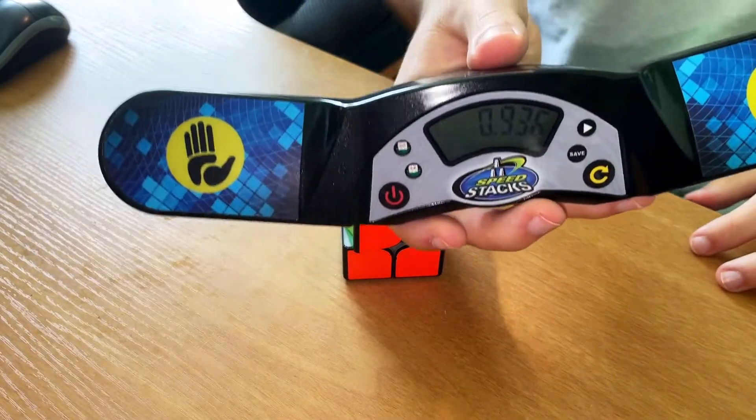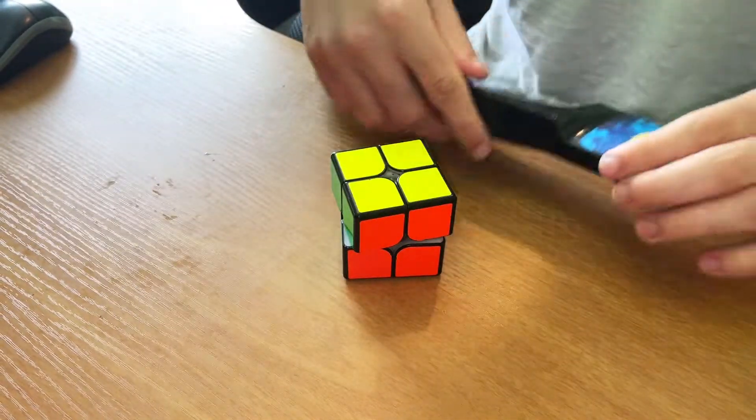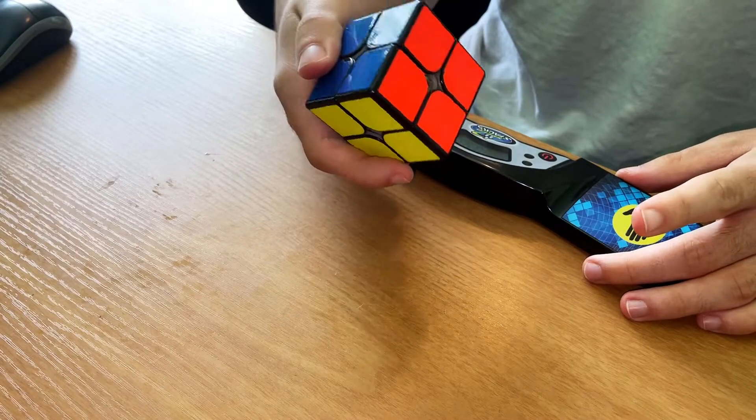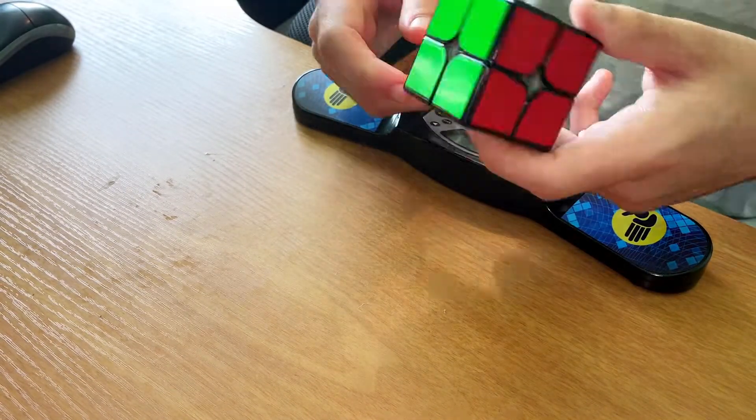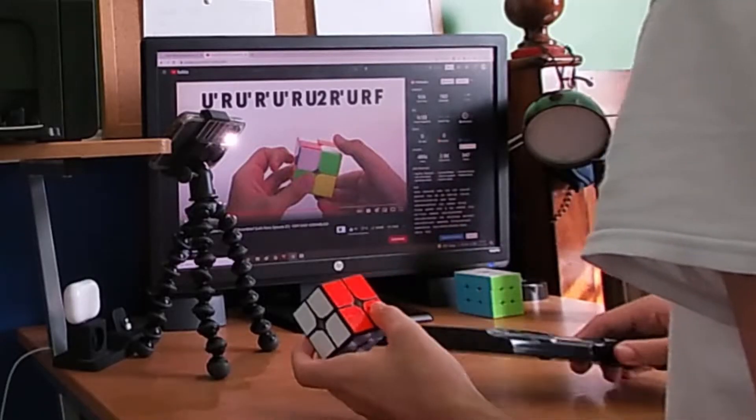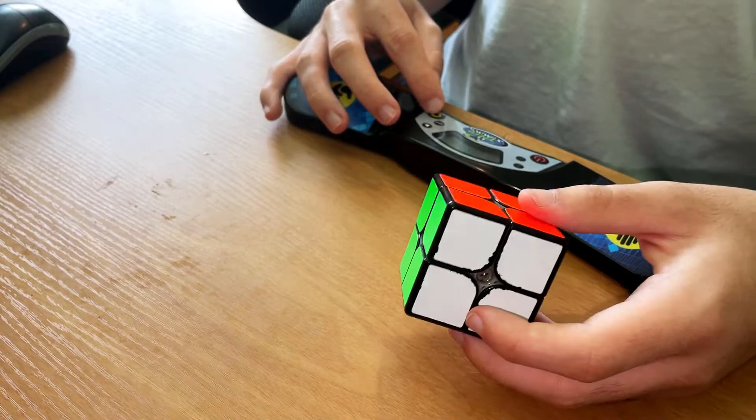Okay, 0.93. Obviously before when I got my personal best, with I think this very same scramble—I'm gonna check right now—it's basically the same scramble, just there's a U prime at the end instead of at the beginning. But it's still a four-mover. Obviously the stackmat slows it down a lot. I got my 0.57 personal best on a keyboard.